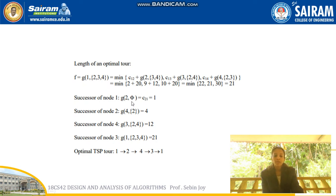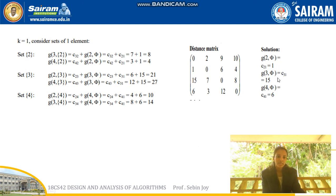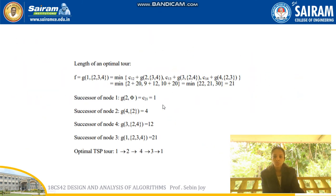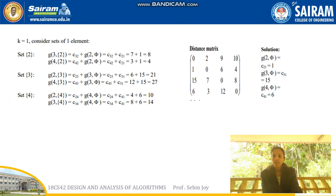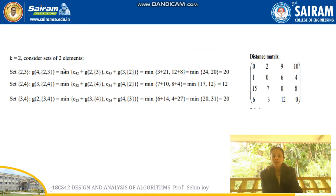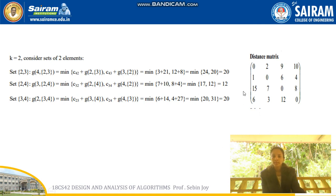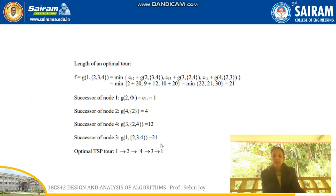Now we find the actual path. From g(1,{2,3,4}), the minimum corresponds to going to vertex 2 first. From vertex 2 in g(2,{3,4}), the minimum value is g(4,{2}), meaning from 2 it travels to 4. Then from 4, the minimum is g(3,{2,4}) = 12, so it travels to vertex 3 next. Finally it returns to vertex 1. So the optimal path is: 1 → 2 → 4 → 3 → 1.